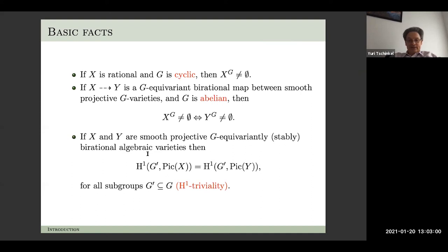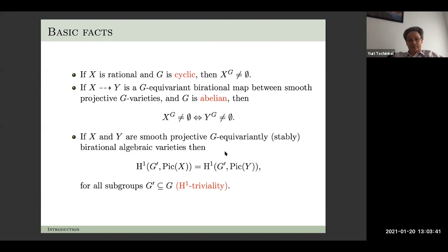There is an abstraction to a stable equivariant rationality version — stable means you multiply by P^n with trivial action. You get this cohomological obstruction by computing the group cohomology H^1 for the group acting on the Picard group of your variety. G-equivariant birational rationality implies that these H^1s are equal — not just for the group but also for all subgroups. This is because when you blow up a G-orbit, you add the permutation module, and permutation modules have trivial H^1.